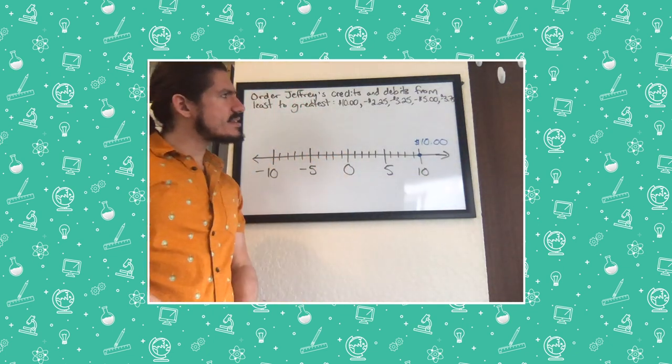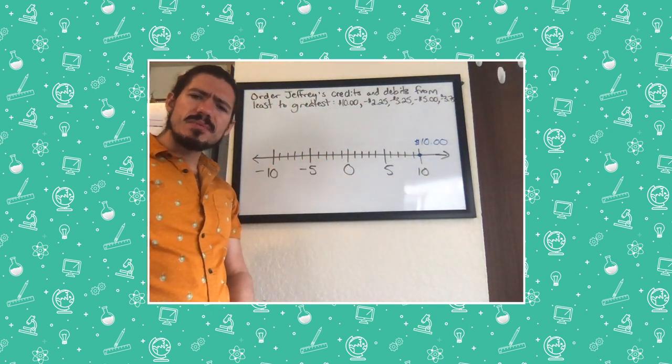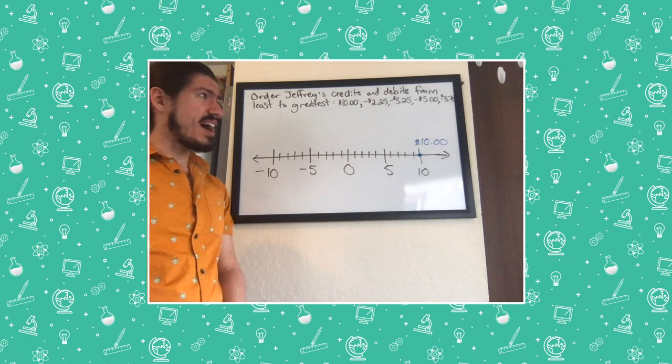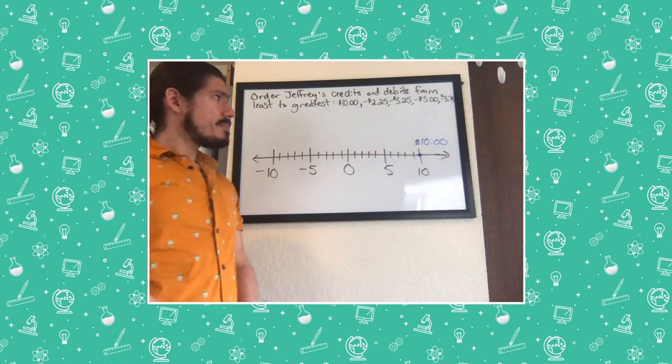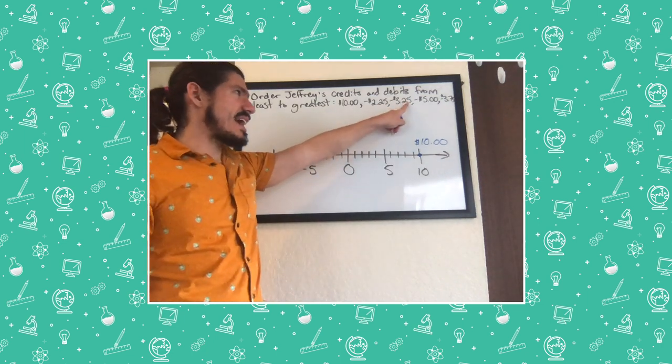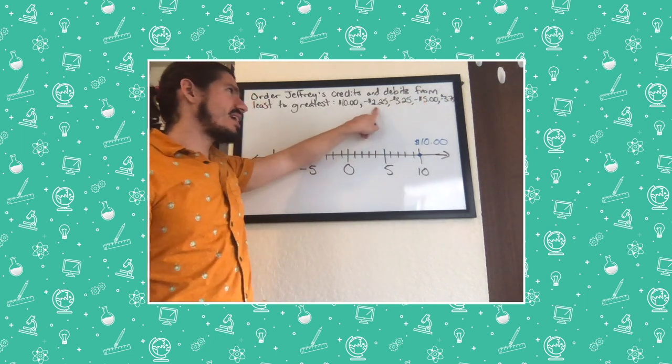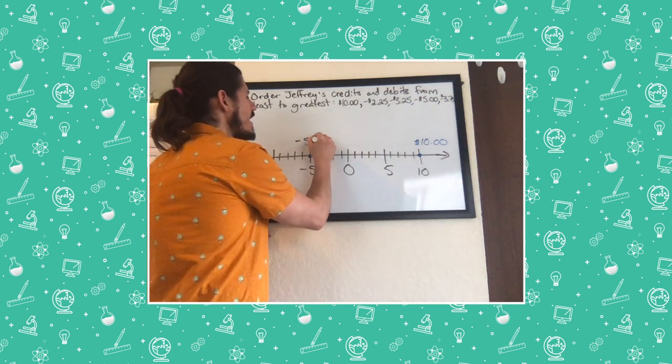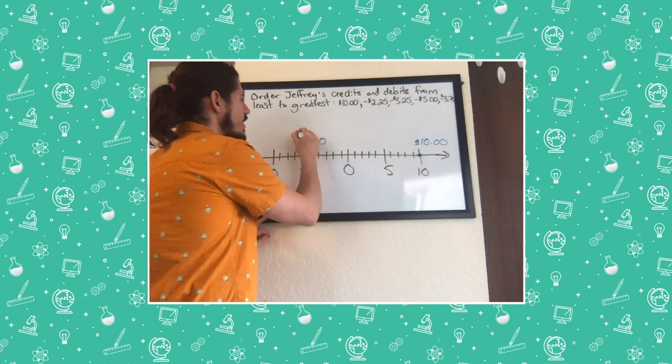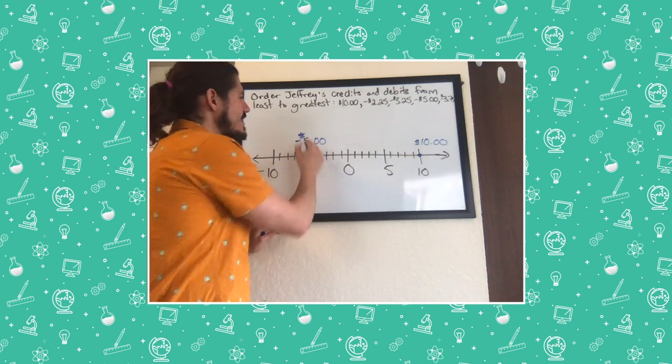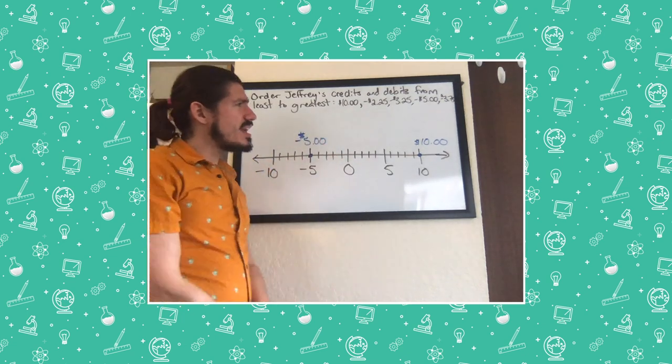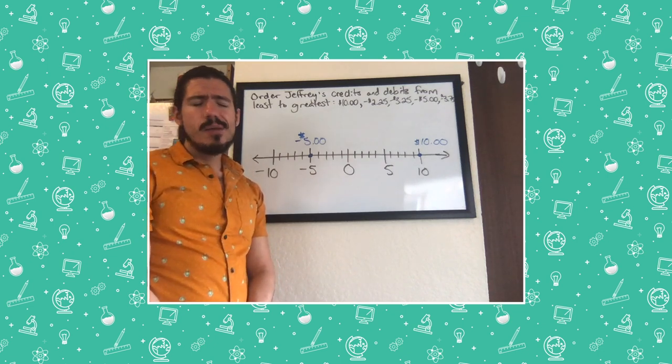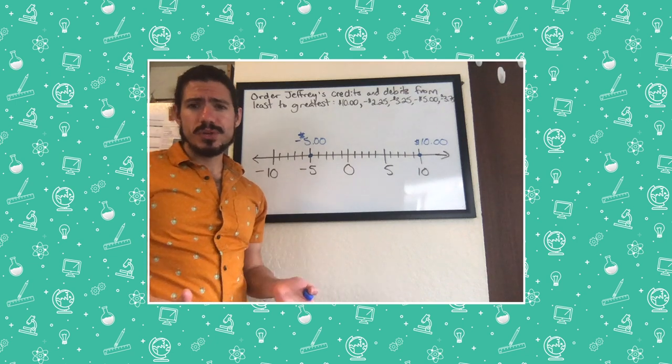What about the least? Which of those negative numbers is going to be furthest to the left? Well, it looks like negative $5 is going to be further to the left. Because regardless of how many cents these have, negative $5 is less than negative $2 or negative $3. Now is where things start to get a little trickier. I can see that next in order is going to be negative $3.25 and negative $3.75. But I'm not quite sure which order to put them in.